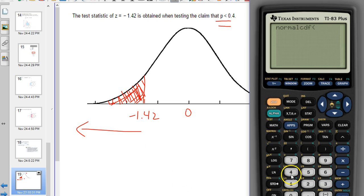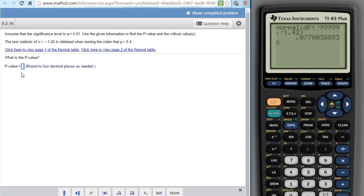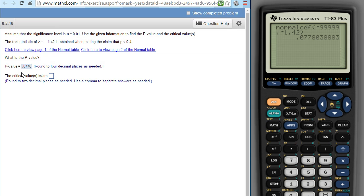Now that area can be found by normal CDF, lower number, upper number. The lower number here is a whole bunch of nines because there is no lower number specified, then the upper number is the test statistic. We're looking for the p-value. So there is our p-value: 0.0778 to four decimal places.